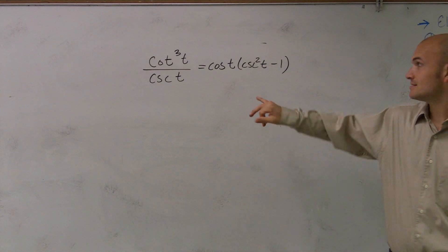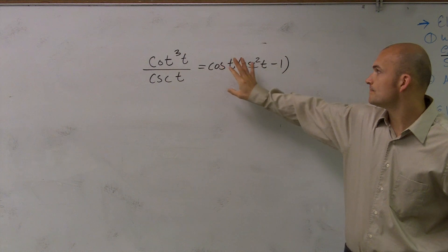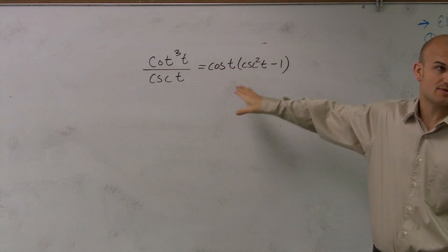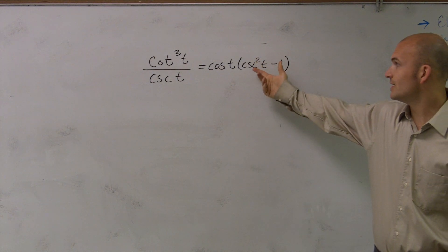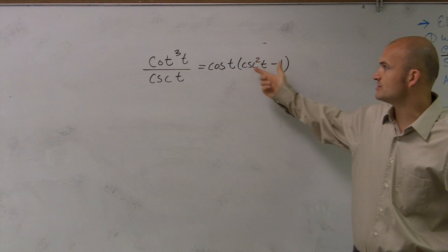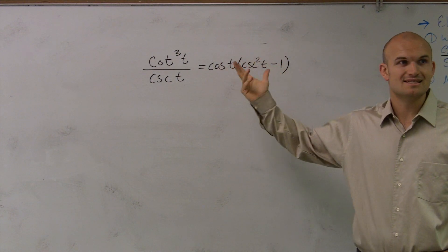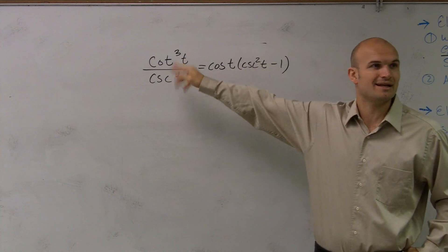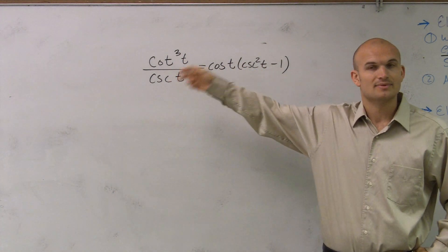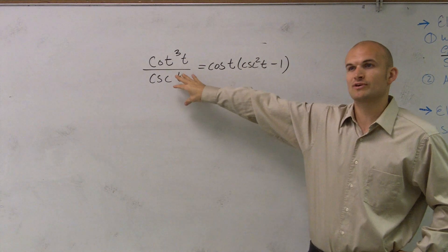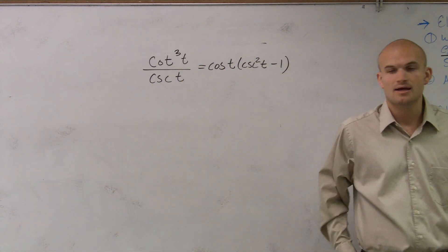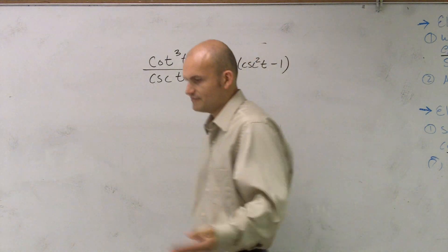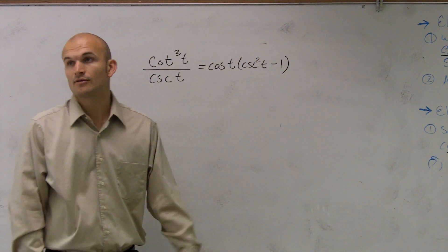I always like to look at my Pythagorean identities and see what I can change. So this is going to equal cotangent. But if I'm now going to be multiplying cotangent times cosine, I can simplify that, but that's not really going to give me anything that's going to look anything like that, right? So I'm probably going to want to start with my cotangent cubed of t divided by cosecant to see if that can really provide me any insight of what I want to do.